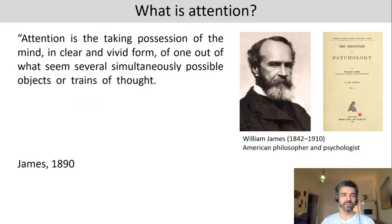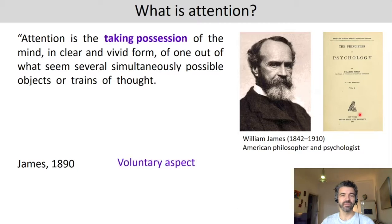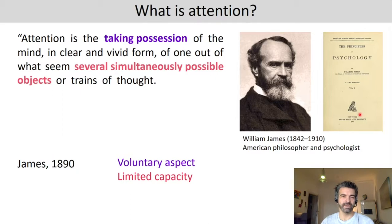An often-used definition of attention comes from William James. He said attention is the taking possession of the mind in clear and vivid form of one out of what seems several simultaneously possible objects or trains of thoughts. There are several aspects he is highlighting here: namely, there's a voluntary aspect — we can decide what we want to attend — and also that there's a limited capacity, so we cannot attend everything at the same time that is presented to us.